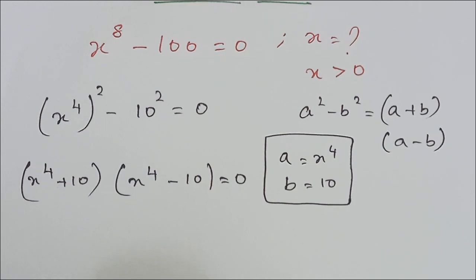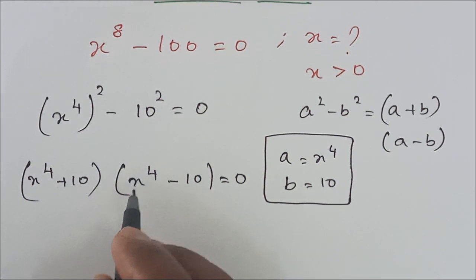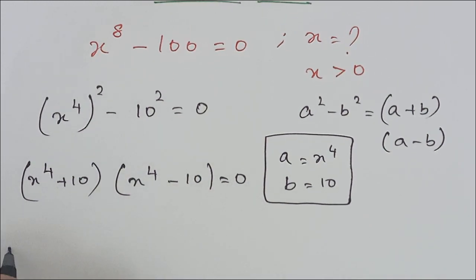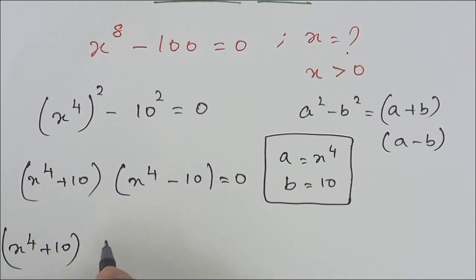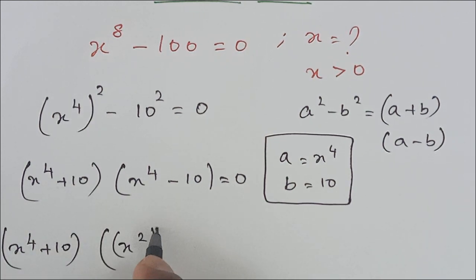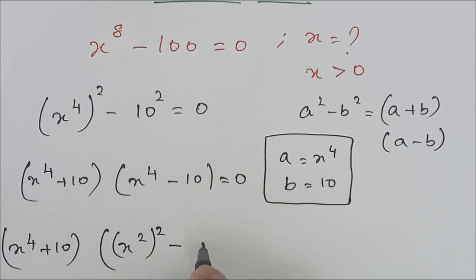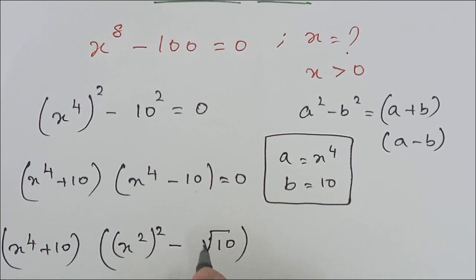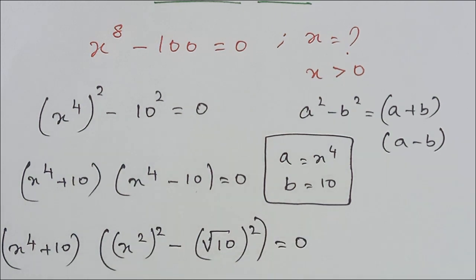Now again, x^4 can be written as (x^2)^2, and 10 can be written as (√10)^2, so (x^4 - 10) becomes (x^2)^2 minus (√10)^2, which equals zero.